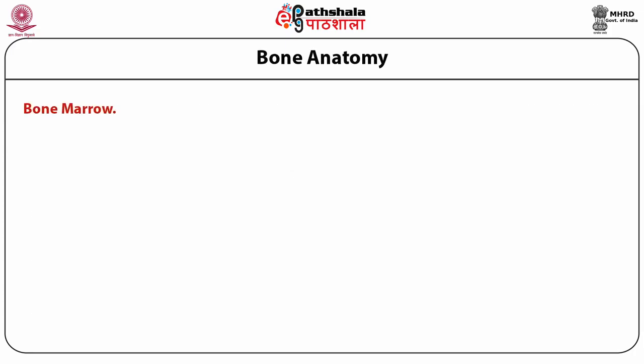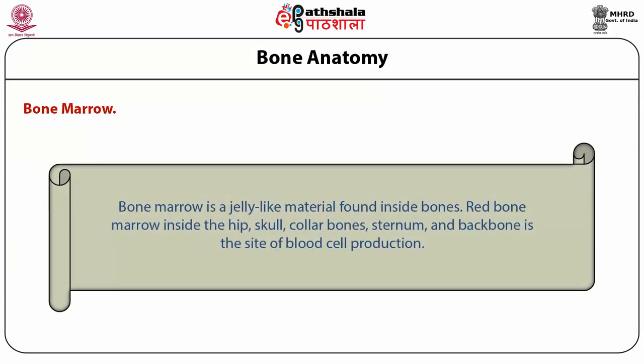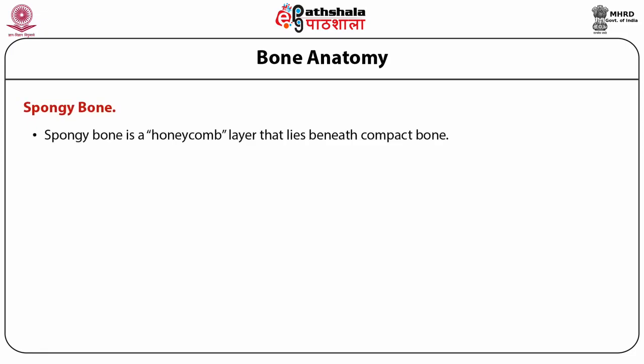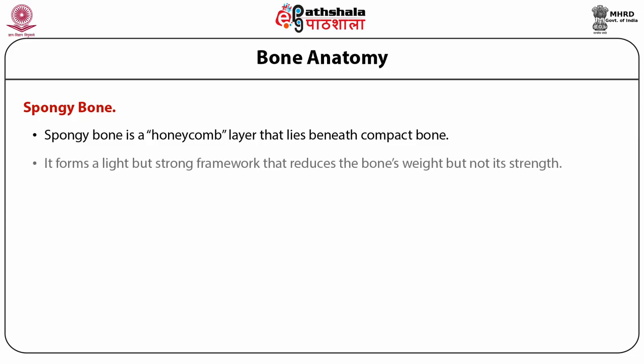Bone marrow is a jelly-like material found inside bones. Red bone marrow inside the hip, skull, collar bones, sternum, and backbone is the site of blood cell production. Red marrow is the site of red and white cell production. Then comes spongy bone: spongy bone is a honeycomb layer that lies beneath compact bone. It forms a light but strong framework that reduces the bone's weight but not its strength.